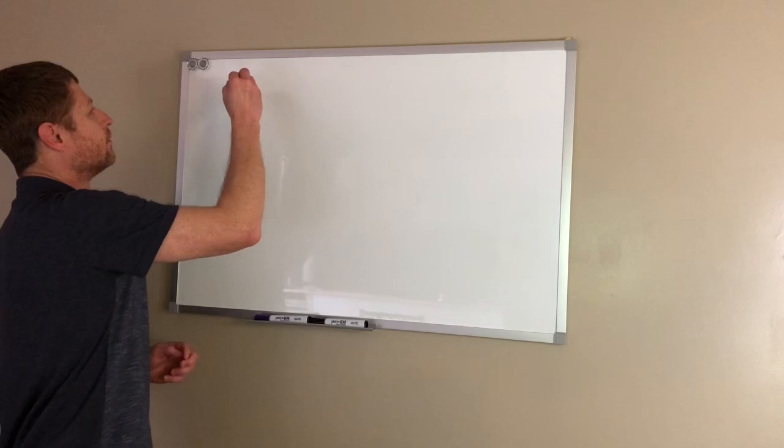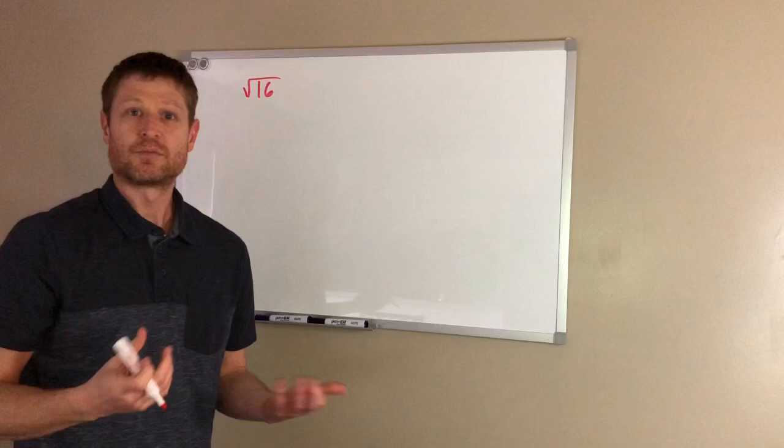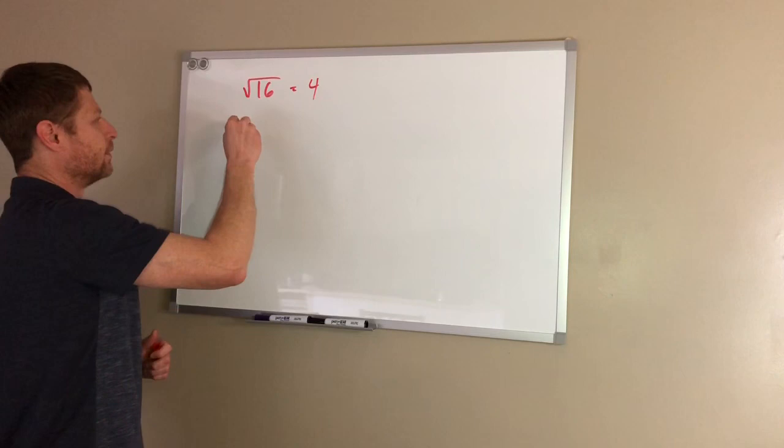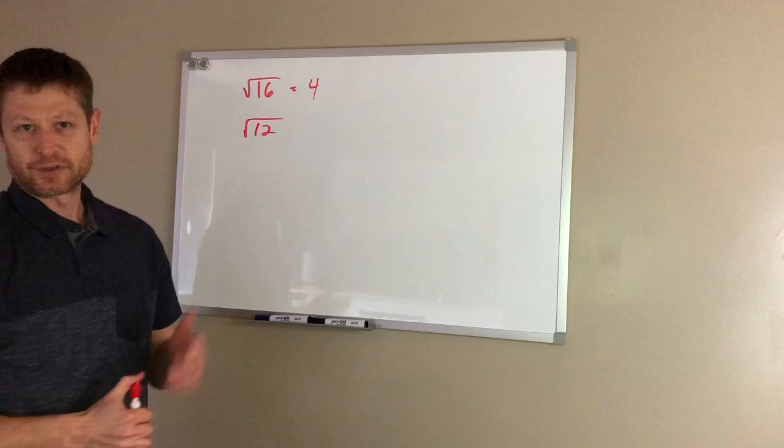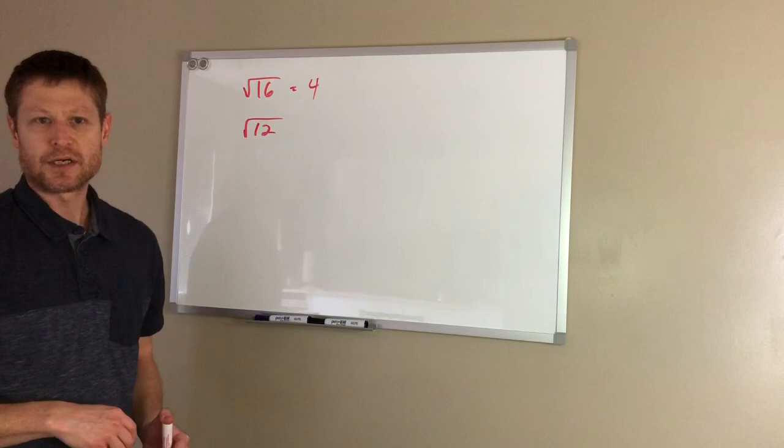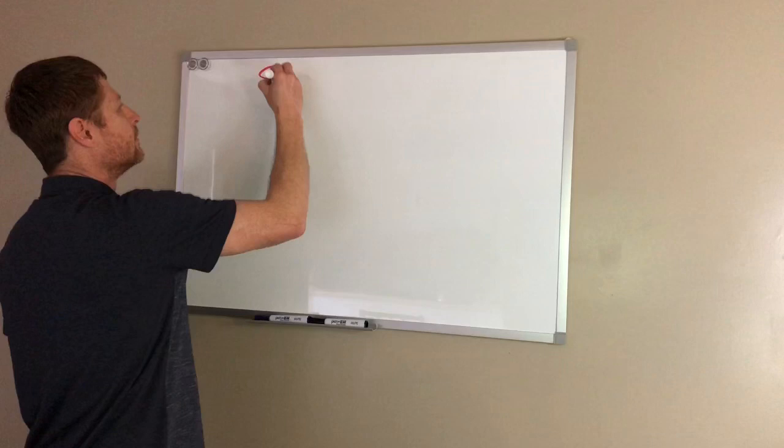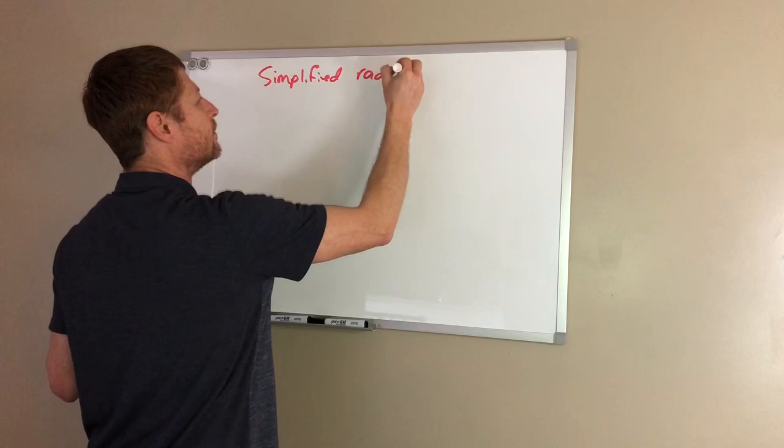So earlier in the year, we were dealing with radicals like this, ones that were perfect square roots. So we did the square root of 16 was 4 because 4 times 4 makes 16. Well then, later on in the year, we went into things like this, the square root of 12, where it does not have a perfect square, and so then we just used the calculator and we approximated it, mostly to the nearest hundredth. Well, sometimes that's not an appropriate answer and you want a more exact answer. In that case, you want to do what is considered the simplified radical form.